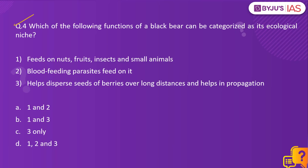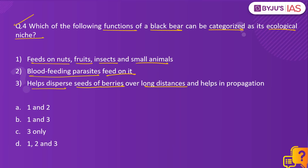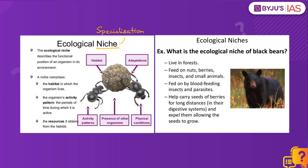Let's take up the fourth question: Which of the following functions of a black bear can be categorized as its ecological niche? All three are correct — option D is the right answer. To answer such a static question, you need to know the definition and concept of ecological niche. The term niche refers to specialization, so ecological niche is the functional position of an organism or species in its given environment.